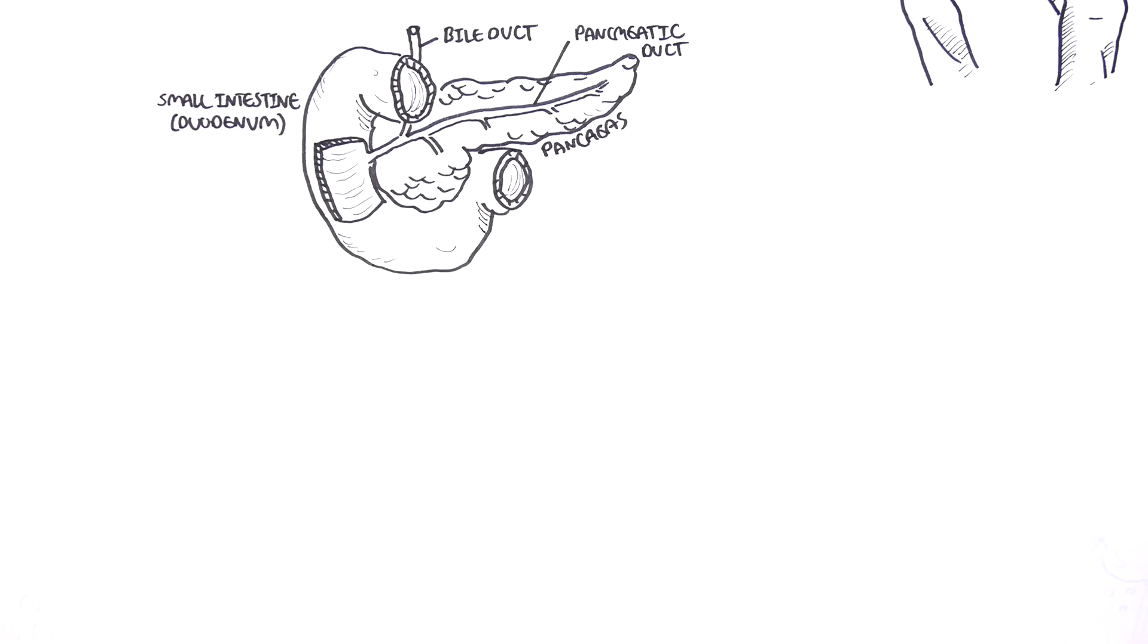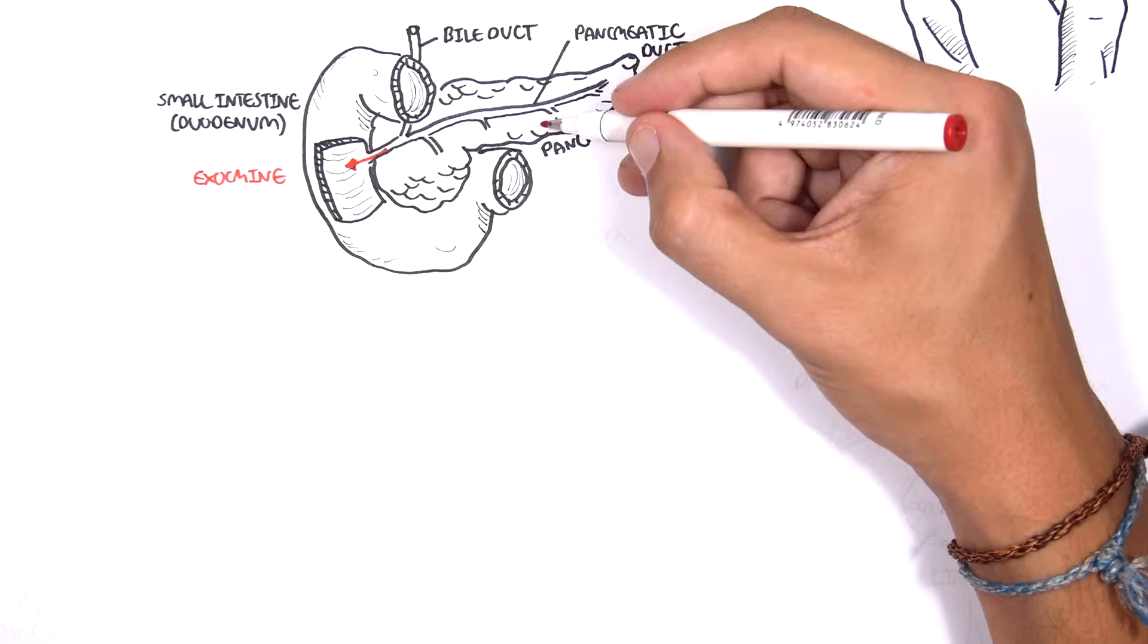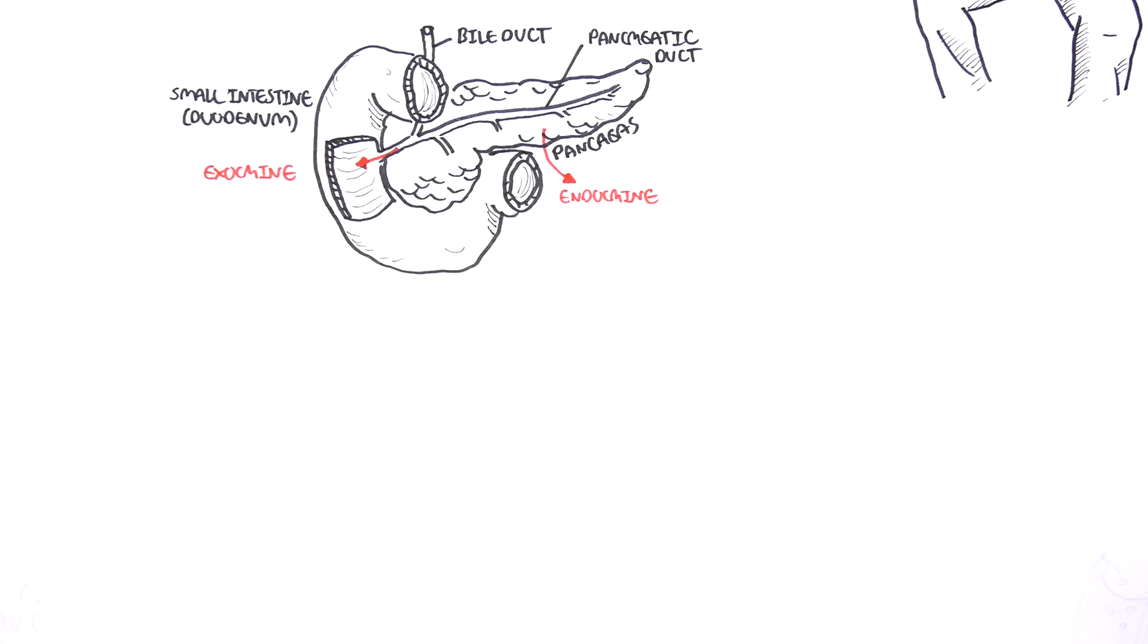The pancreas has two main functions. It works as an exocrine gland where it secretes digestive enzymes through the pancreatic duct into the small intestine. And the pancreas also works as an endocrine organ by secreting hormones in the blood such as insulin and glucagon.